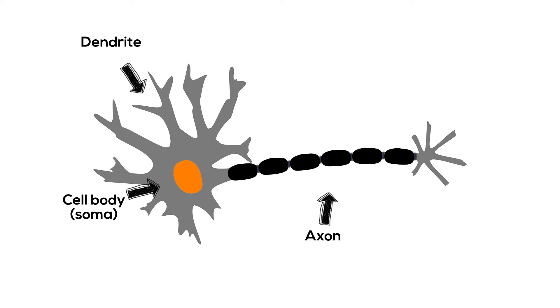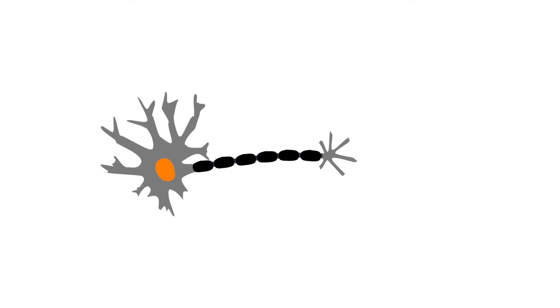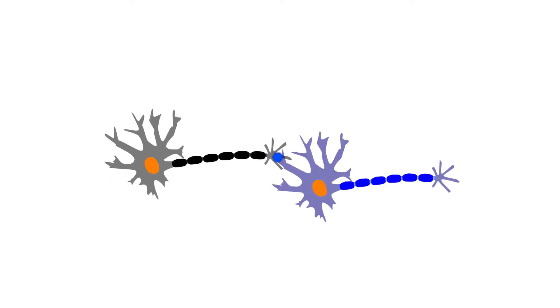Axons are covered with a white matter called myelin, a fatty tissue that helps increase the speed with which signals move from one neuron to another. As we keep practicing, sending and receiving information about the task becomes more efficient and takes less effort.